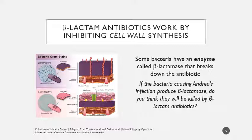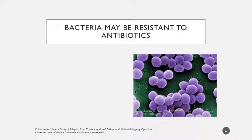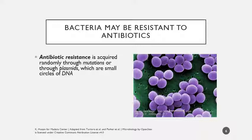If the bacteria causing Andrea's infection produce beta-lactamase, they will not be killed by a beta-lactam antibiotic - you're using a tool against them and they immediately break it down. Many bacteria are naturally resistant to antibiotics, sometimes because they don't have the targeted structure, other times because they produce an enzyme that breaks down the antibiotic. This antibiotic resistance might be acquired through random mutation or through the sharing of plasmids, which are small circles of DNA that often have superpowers like antibiotic resistance.